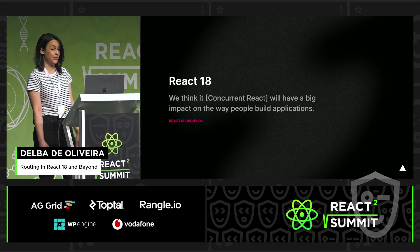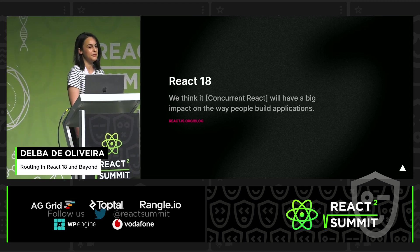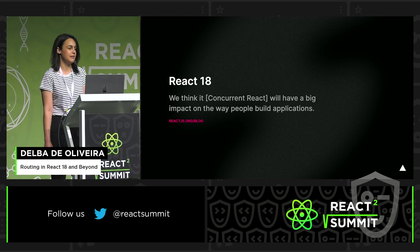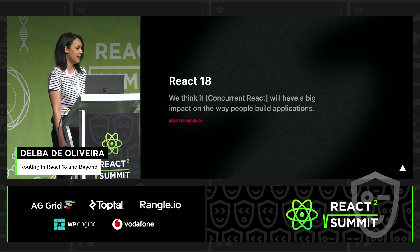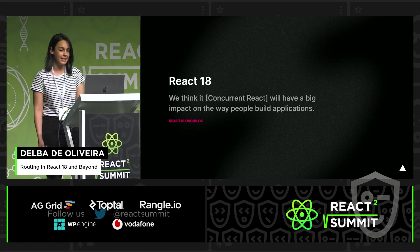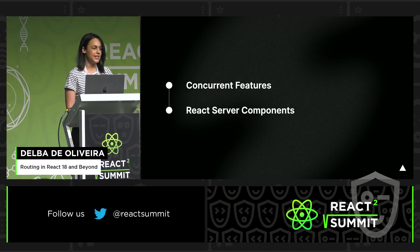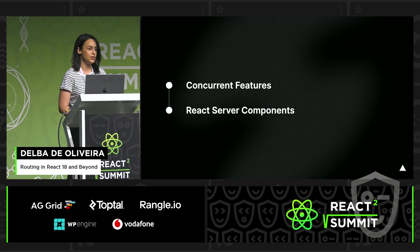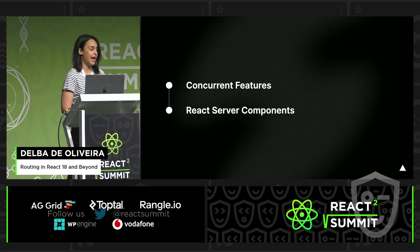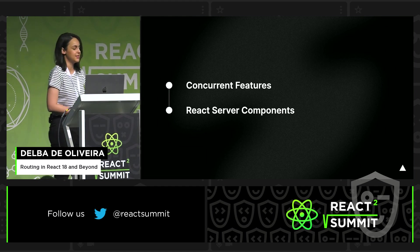Now, as you may know, a few months ago React 18 was released with new concurrent features. And on the React blog, the team mentions that they expect concurrent features to have a big impact on the way that developers build applications. So today I want to discuss what this impact could mean and how we will change how developers build applications, especially with React server components as well.